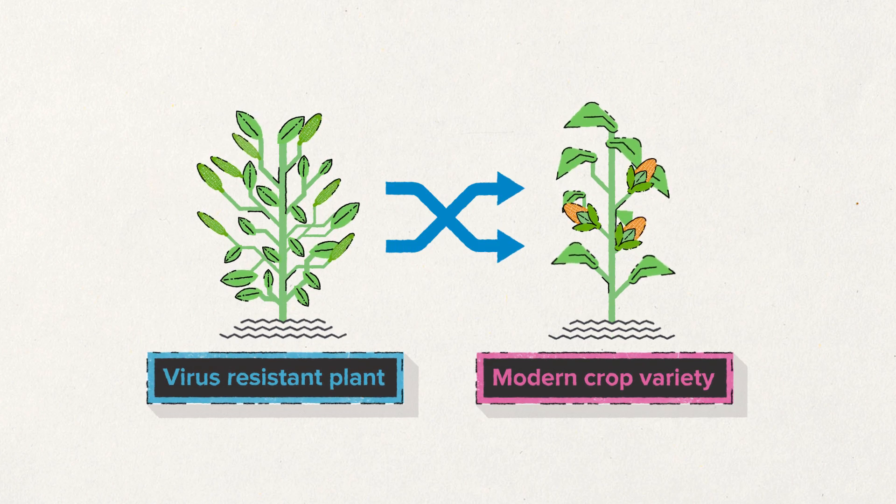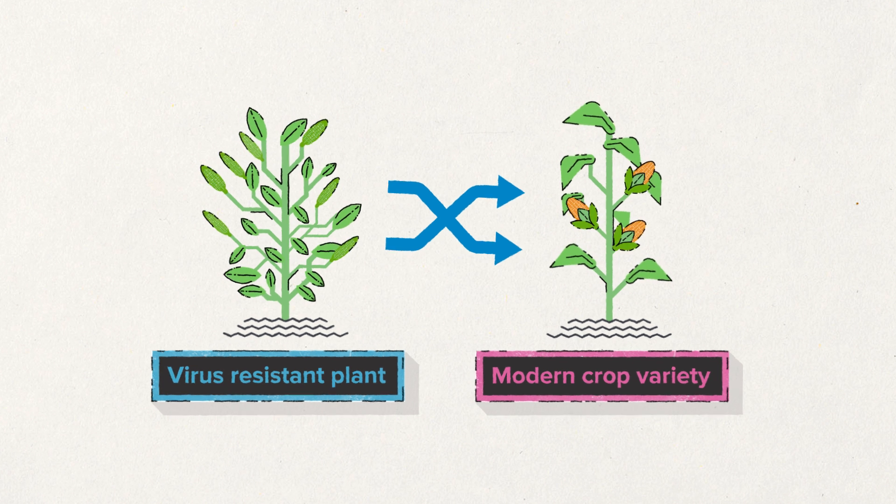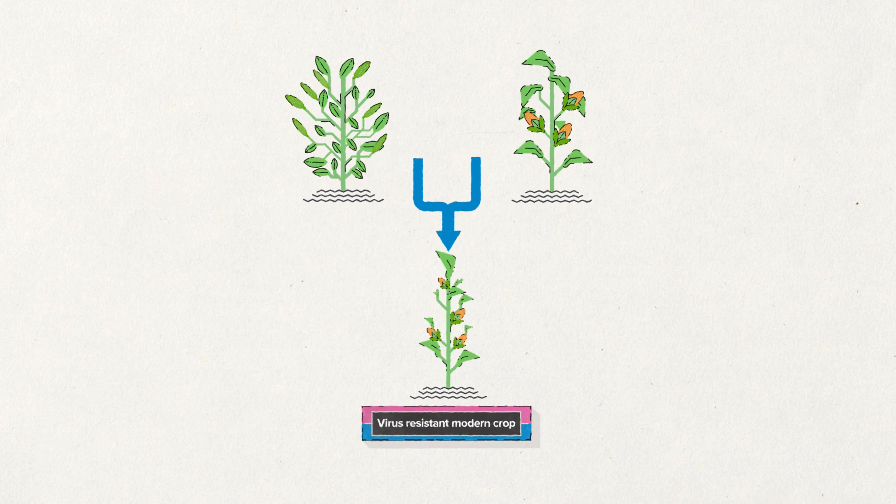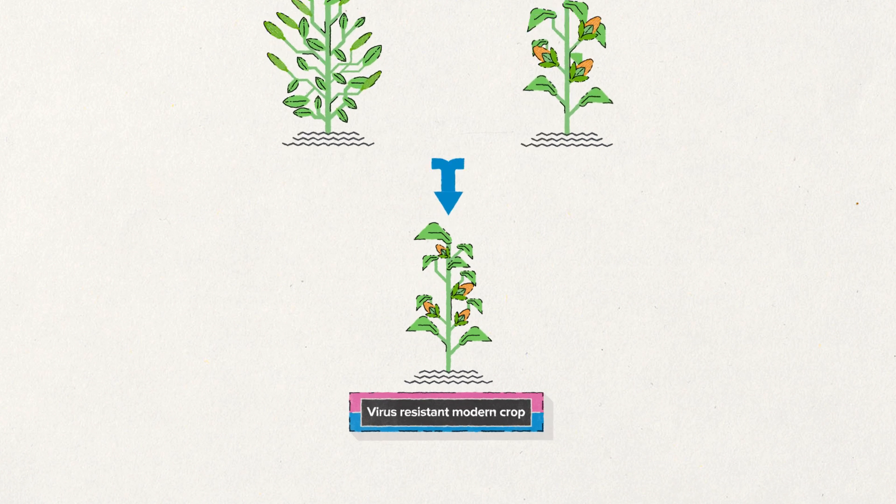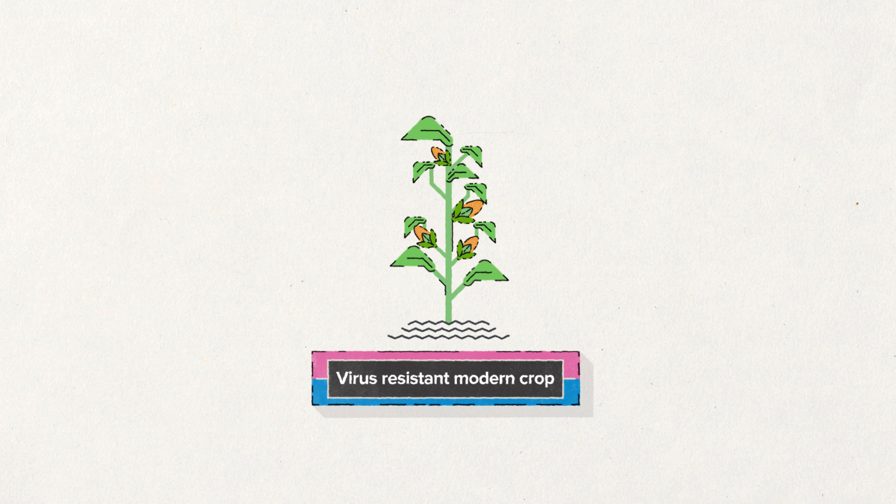In some cases, conventional breeding will be the best way to deploy these genes. That is, by crossbreeding the crop variety with the plant that contains the genes providing these characteristics.